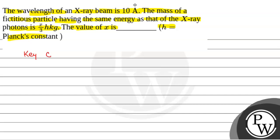The key concept to solve this question will be E equals hc by lambda, where lambda is the wavelength, and it is also equal to m times c squared, where m is the mass of the fictitious particle.